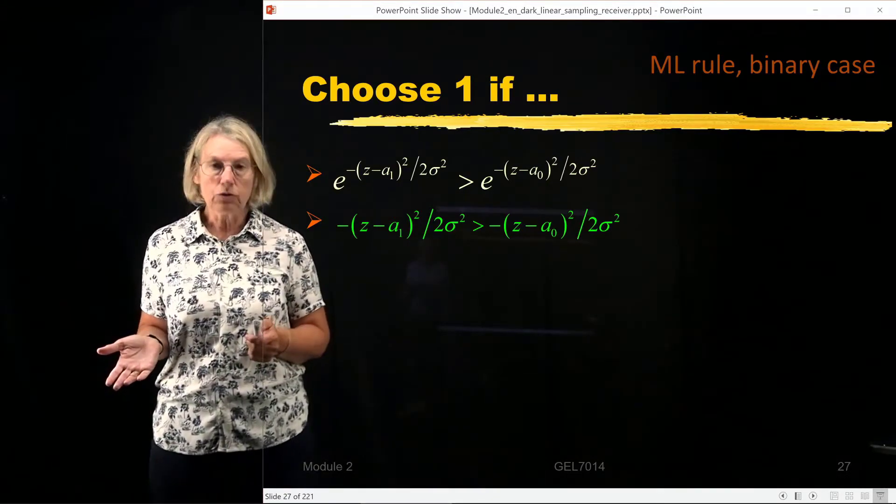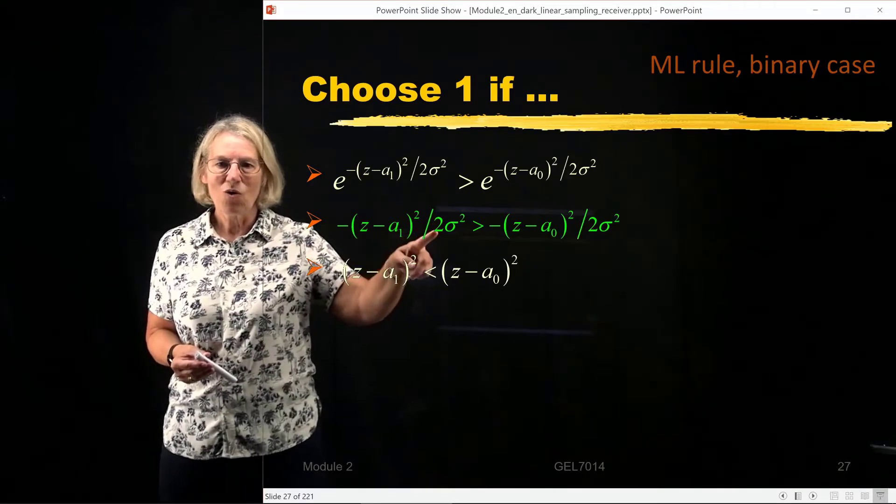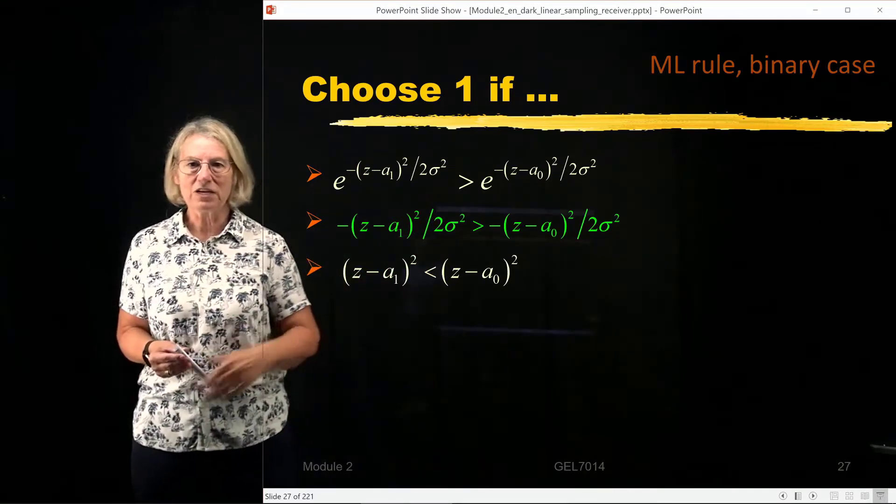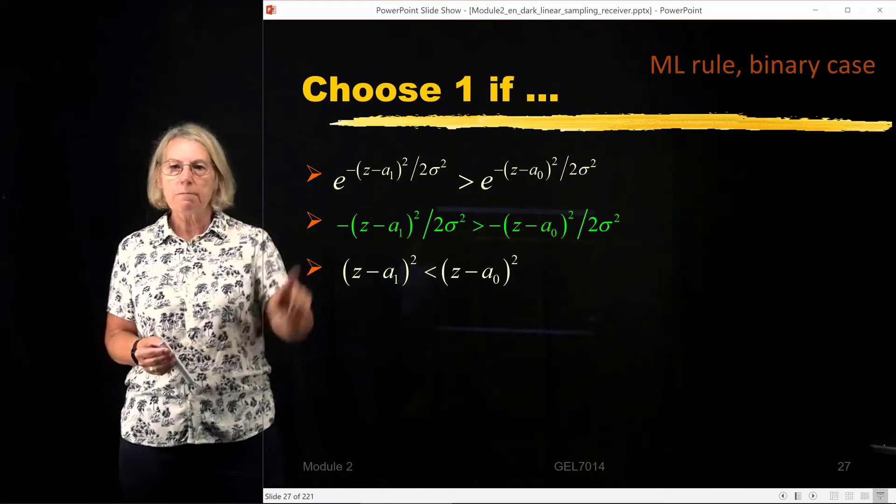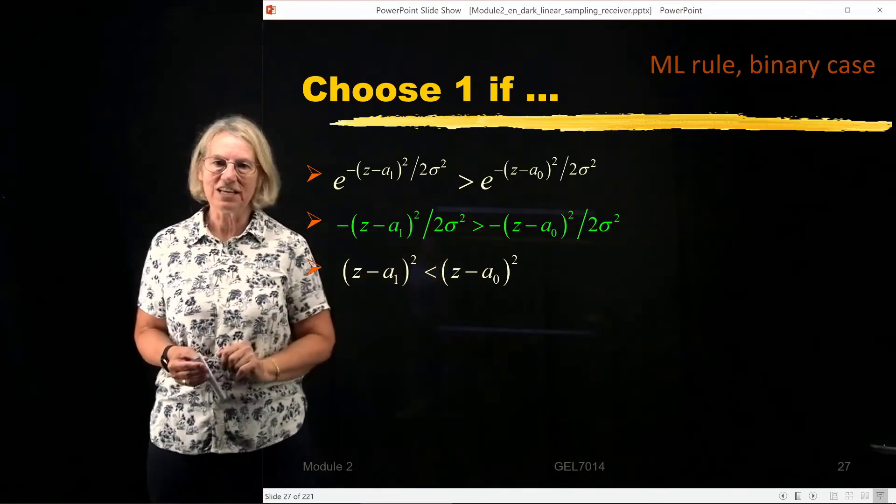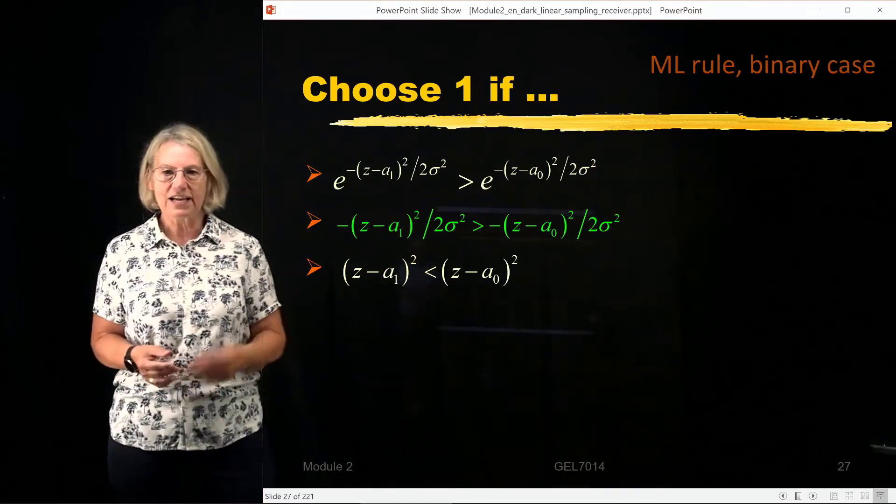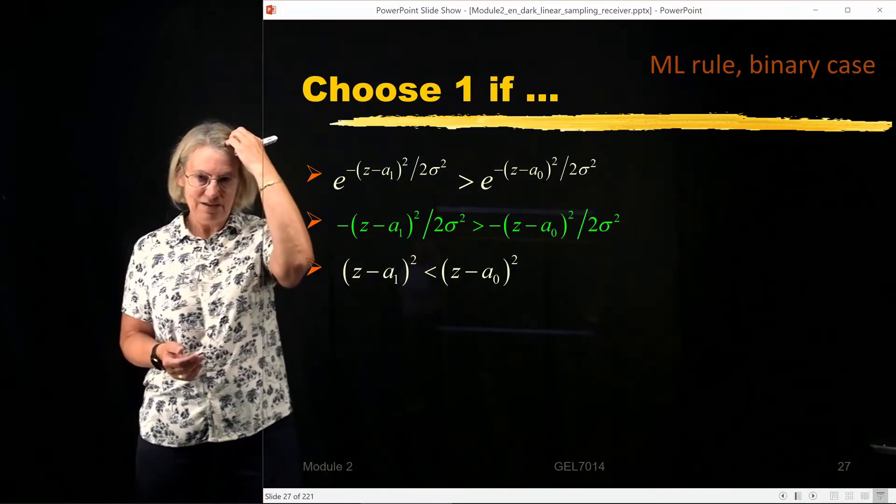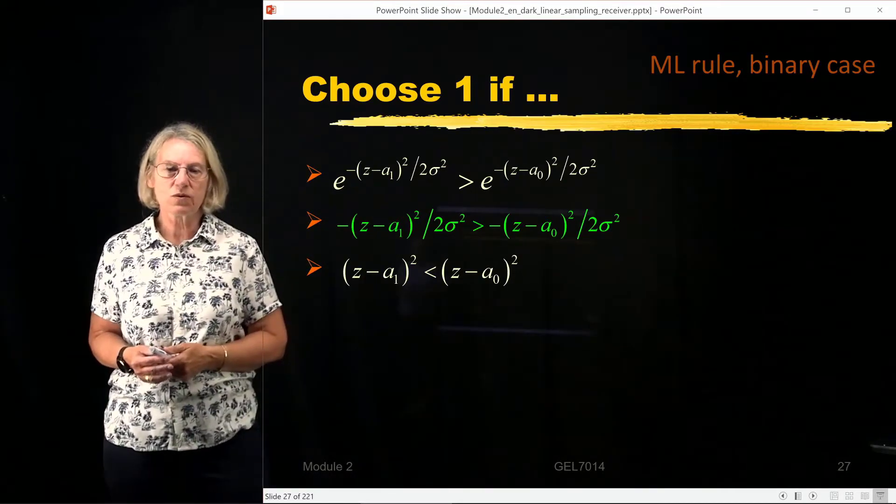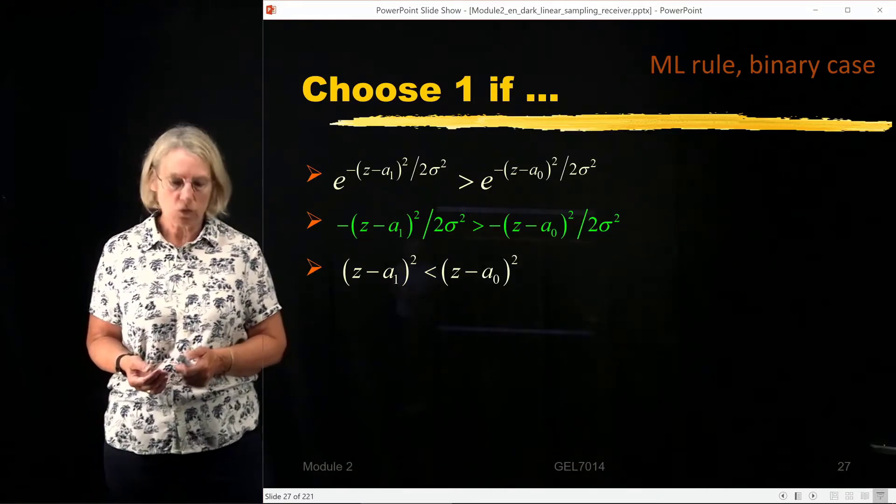So next thing I'm going to do is I'm going to multiply by -1 over 2 sigma squared because those are common terms of both of them. Of course when I multiply by a negative number I have to flip the sense of the inequality. So now these two are equivalent. I take (z - a₁)² and compare it with (z - a₀)². And I'm choosing the smaller one.